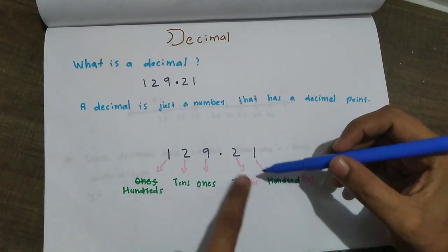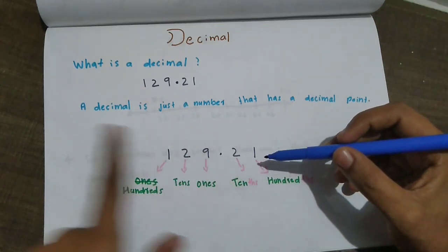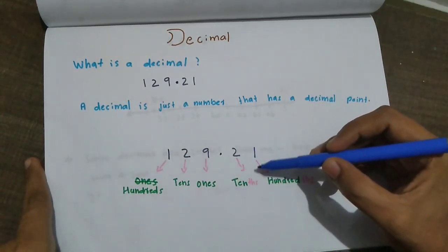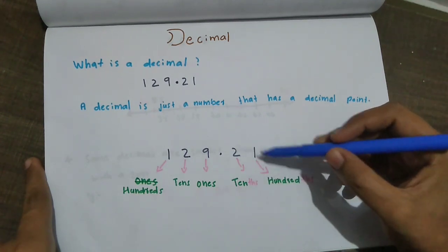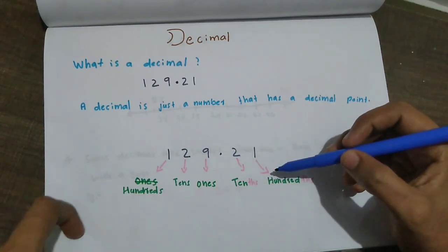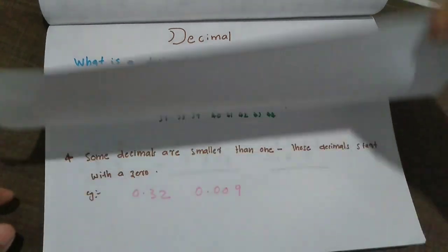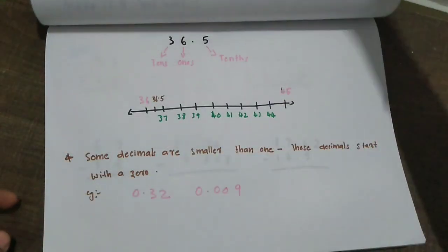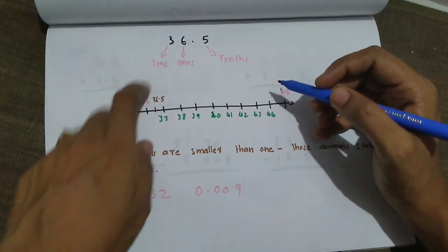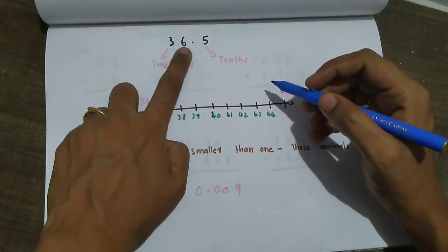After the decimal point, we have tenths — that is one divided by tens. We will create a number line like this to place the number. The number is 36.5.